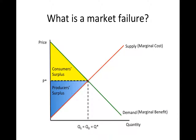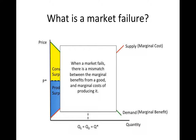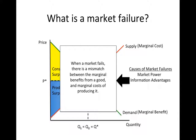When a market fails, it fails because some of these benefits are lost. At the heart of any market failure is a mismatch between the marginal benefits from the last unit of the good consumed and the marginal costs of producing that unit. This mismatch can be caused by a number of things, including market power, information advantages, and externalities.